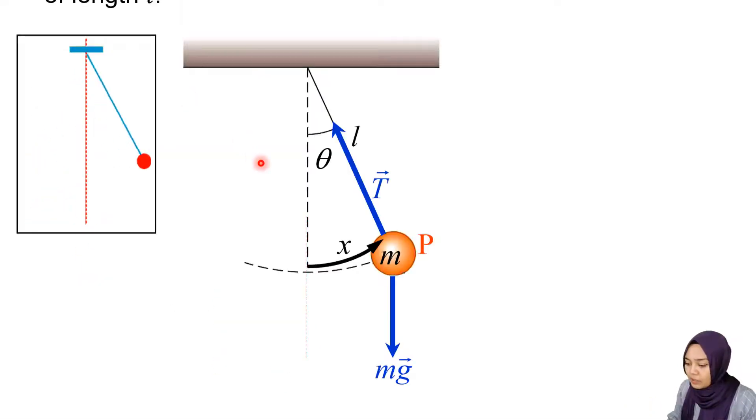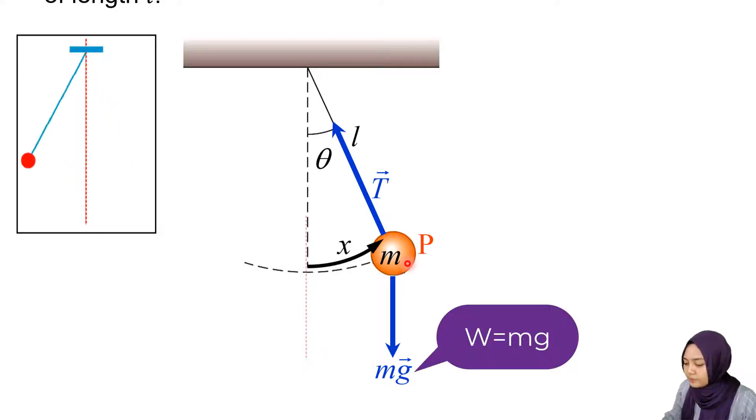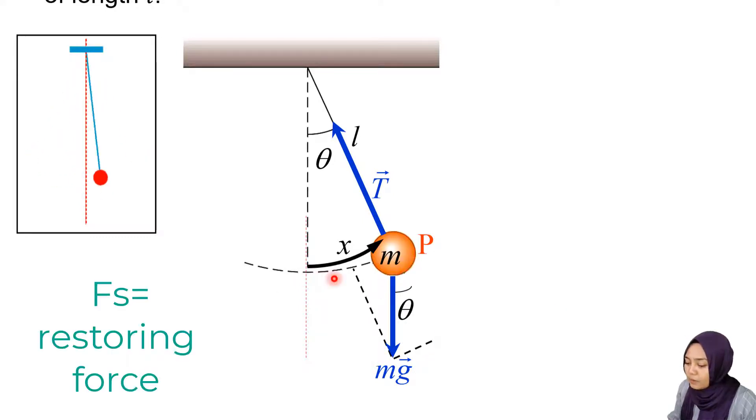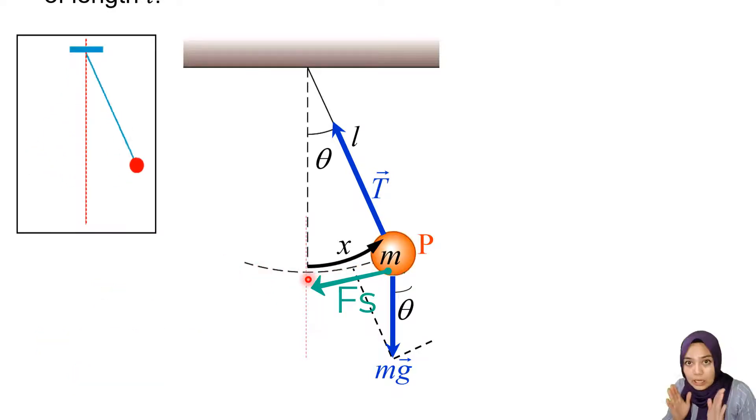We have tension and weight. The restoring force always tries to bring the bob back to the equilibrium point.